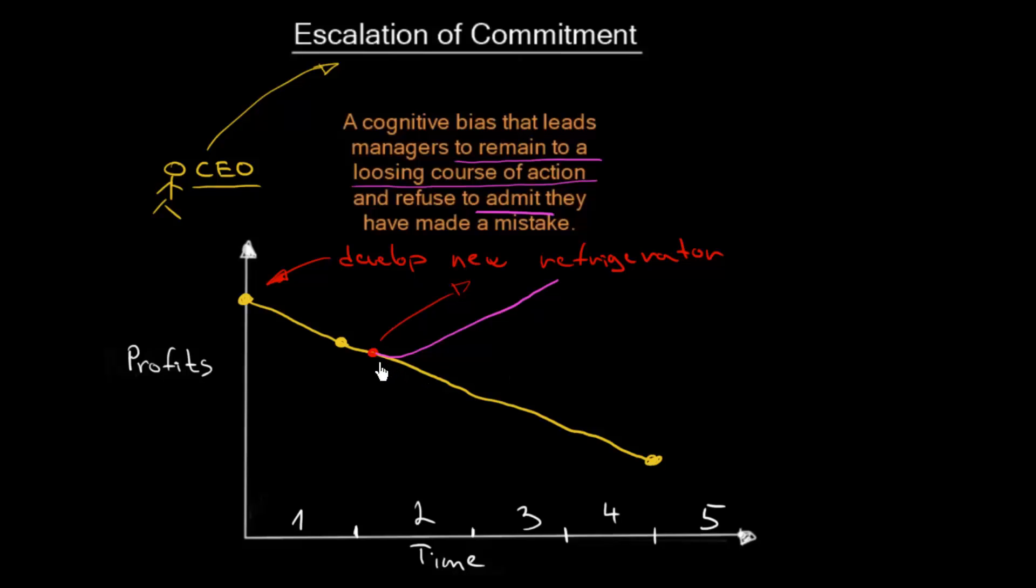But we do not want to admit that we made a mistake. So we are still pushing more and more. We are investing into marketing. We want to market this new refrigerator. Because of that, we are remaining at this losing course of action because we are simply afraid to admit we made a mistake. That is the escalation of commitment that sometimes managers suffer from.